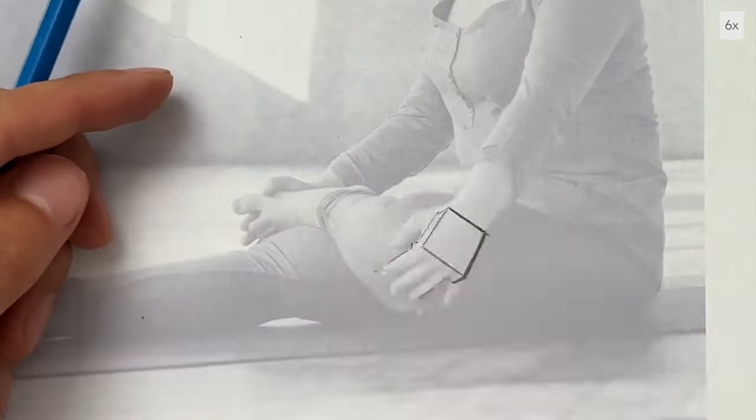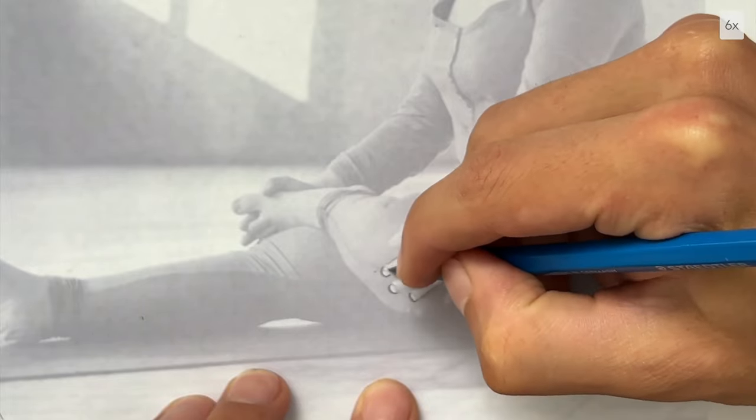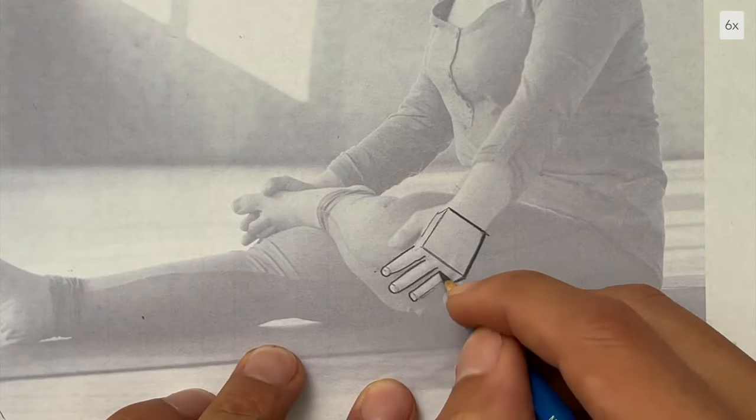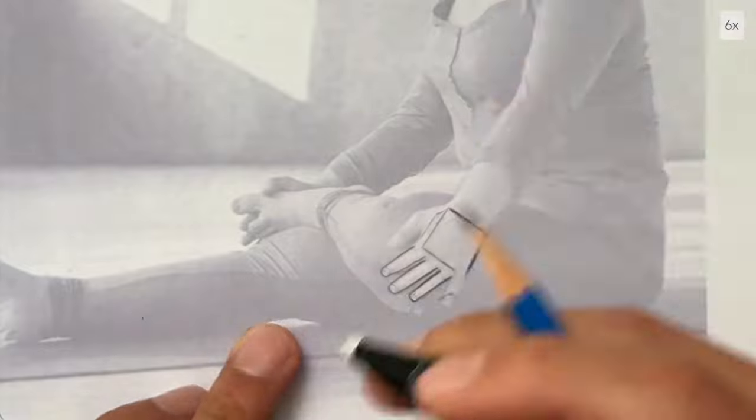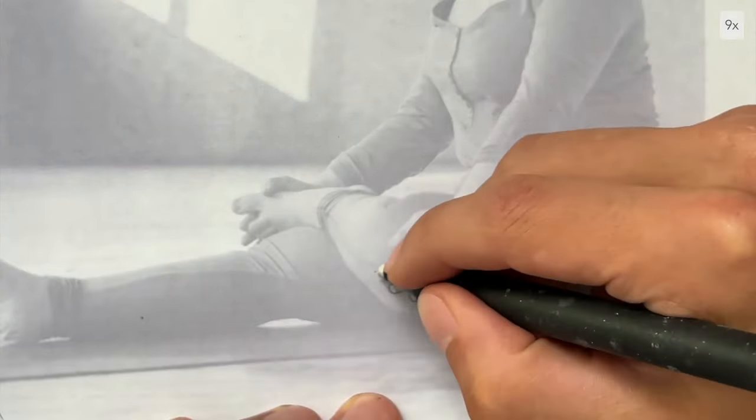In this drawing, I'm also paying close attention to the line quality. I want the lines on the outside of my forms to be thicker and darker than the internal lines. This helps communicate the three-dimensional mass of these forms.